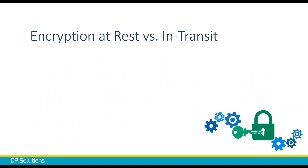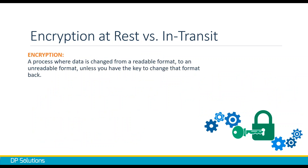Now let's talk about encryption. Encryption is a process where data is changed from a readable format to an unreadable format unless you have the key to change it back. If I wanted to send a message to Jill that was only between us over the internet, I could put it in a language only Jill and I could understand, and then openly send that message — it's gibberish to everybody else. That's essentially what encryption is.